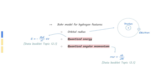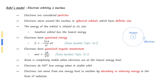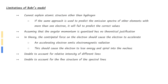The Bohr model for hydrogen features orbital radius, quantized energy, and quantized angular momentum. This makes statements one and three correct. Statement two is the equation for radioactive decay, not the Bohr model. Here is a full summary of the Bohr model and its limitations — pause the video to have a closer look.